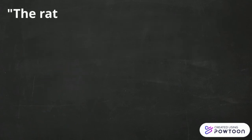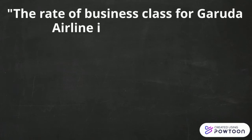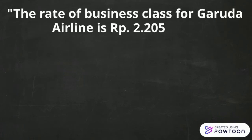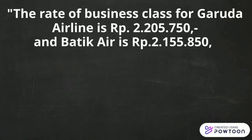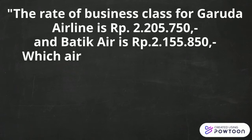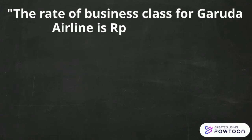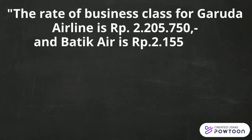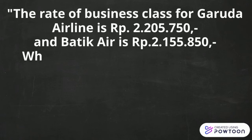Explain the rate for each airline — for example: the rate of business class for Garuda Airline is two million two hundred and five thousand seven hundred and fifty rupiah, and Batik Air is two million one hundred and fifty-five thousand eight hundred and fifty rupiah. Which airline would you like, sir?